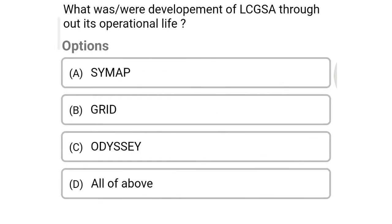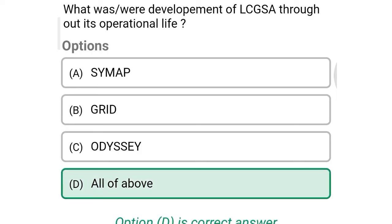Next question: What was the development of LCGSA throughout its operational life? Option A: SYMAP, Option B: GRID, Option C: ODYSSEY, Option D: all of the above. So the correct answer is Option D, all of the above.